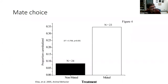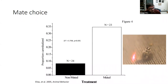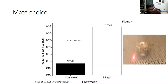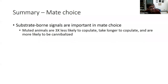Another thing we found is that non-muted animals were less likely to be cannibalized, while animals that could not produce vibrations were much more likely to be cannibalized. Here you have a female, a male is about to mate, and then the female decides no thank you and starts chowing down on that male. So spiders tend to be very aggressive and this does happen quite a bit. To summarize: substrate-borne signals are important in mate choice — muted males are three times less likely to copulate, take longer to copulate, and are more likely to be cannibalized.